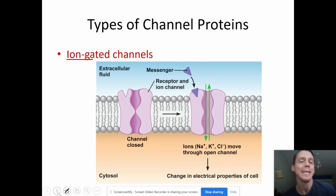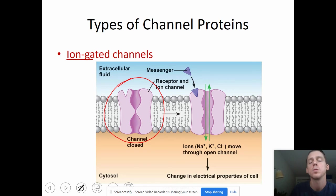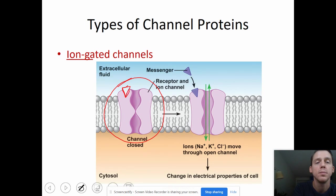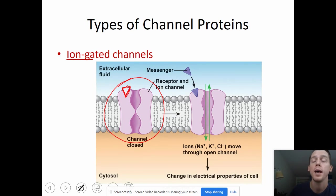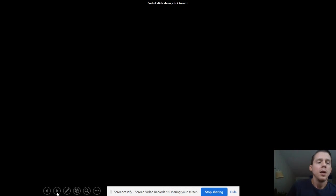Some channel proteins are gated. This protein over here is closed, and then when a specific protein messenger puts itself in the correct position, it is going to cause — does anybody remember the name of a change in shape for a protein? We call that a conformational change. A conformational change in the protein is going to allow ions to go through because now it is open.